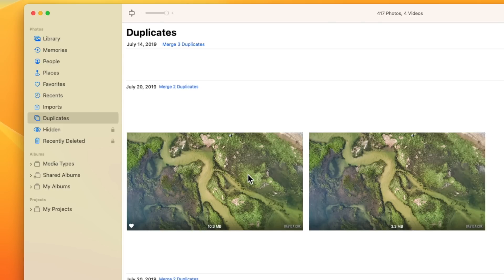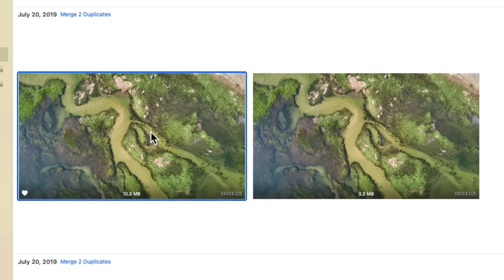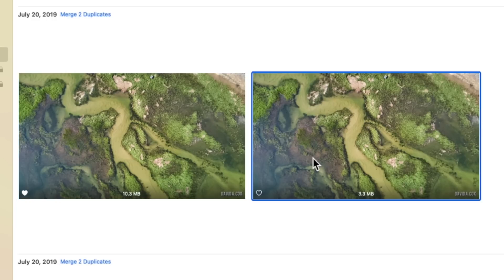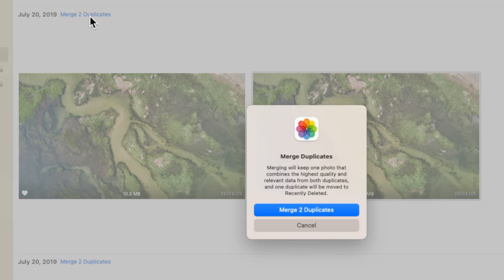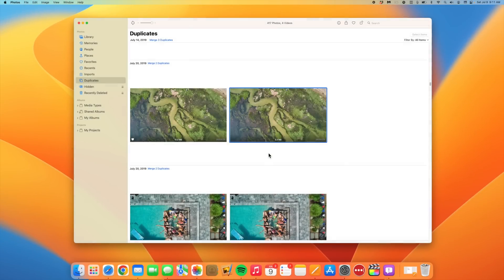Another handy new feature is that Photos can now detect duplicate photos. If you look at these two drone photos that I took back in Provincetown, you can see that one is a lot larger of file size than the other. From here, we have two options. I can either delete one of them, or I can merge the characteristics of both into one photo. Personally, I recommend you just delete the smaller of the two images.